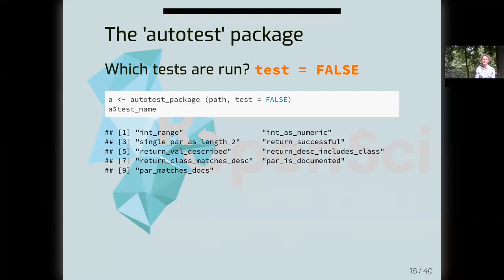The other column of interest is test_name. Since the parameter x was an integer parameter, some of the tests constructed examine the acceptable range of that input — converting it into a numeric, converting a single value into a length of two — and all of these tests pass successfully. The remaining tests from four onwards are all about matching documentation of input parameters and return values.